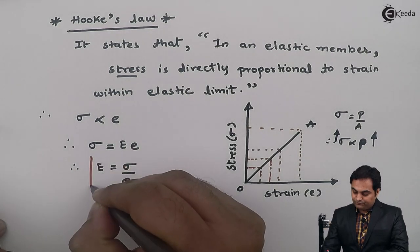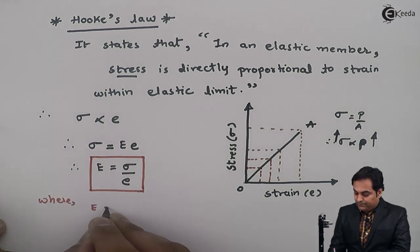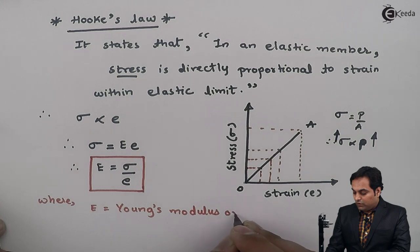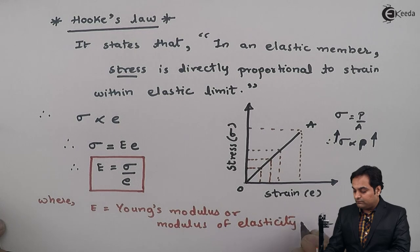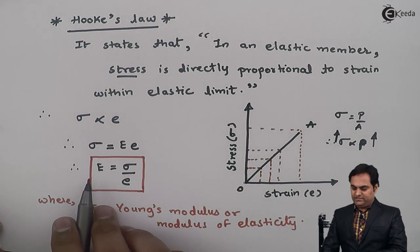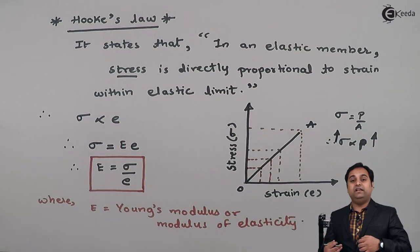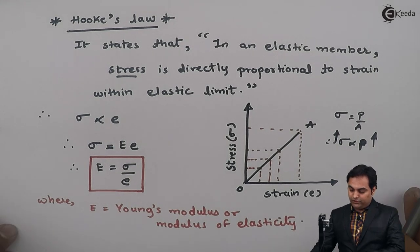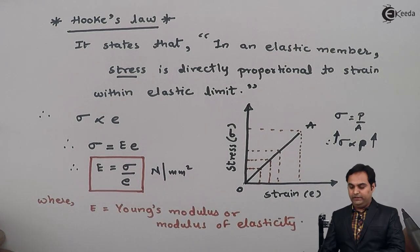Where capital E is called Young's Modulus or Modulus of Elasticity. The modulus of elasticity is given by the ratio of stress to strain, and it decides how elastic a material is. The unit of Young's Modulus is the same as the unit of stress — Newton per mm² — because strain is dimensionless.